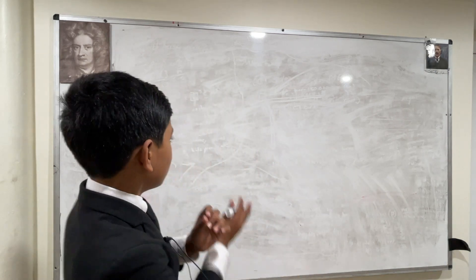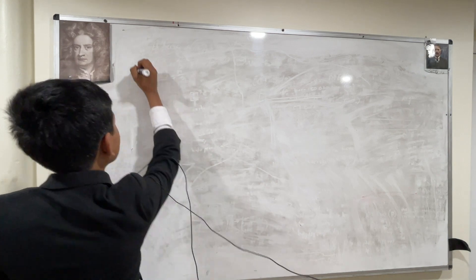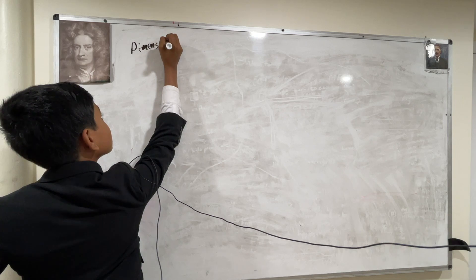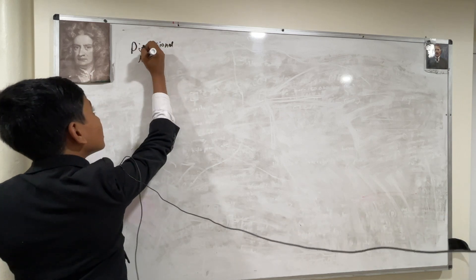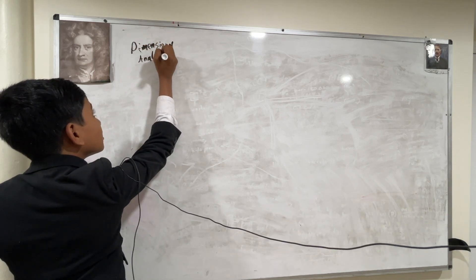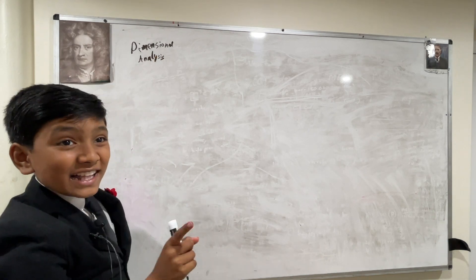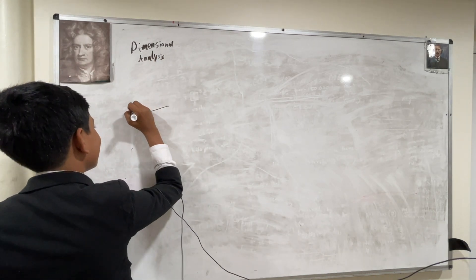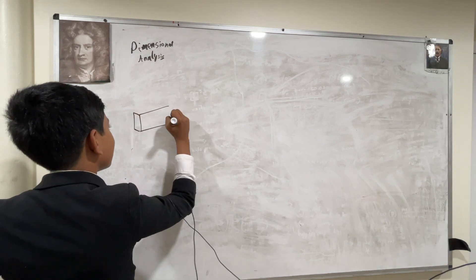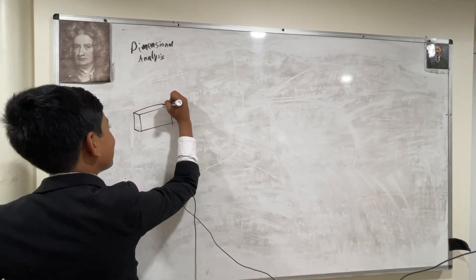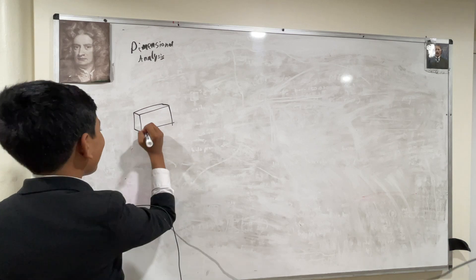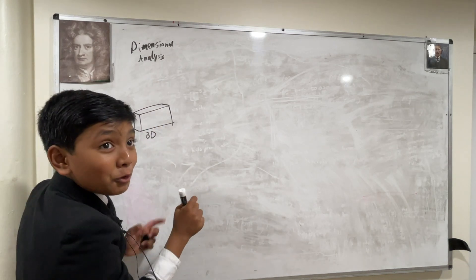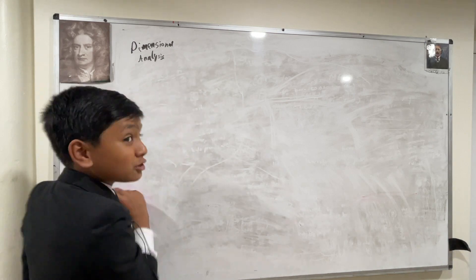All right, so what is Dimensional Analysis? Well, I'll give you a little idea. Let's say you have a rectangular prism. How many dimensions does it have? Three. And now throw that all out the window, because this is trash.